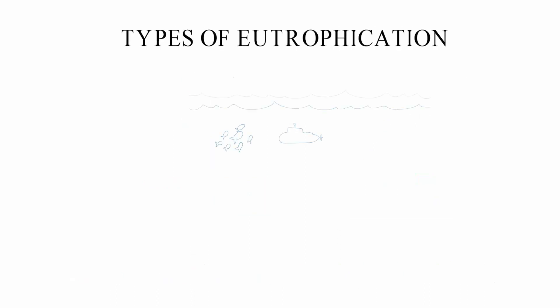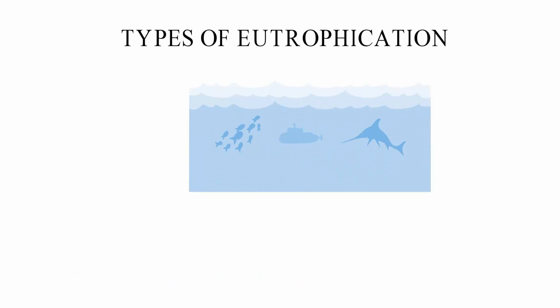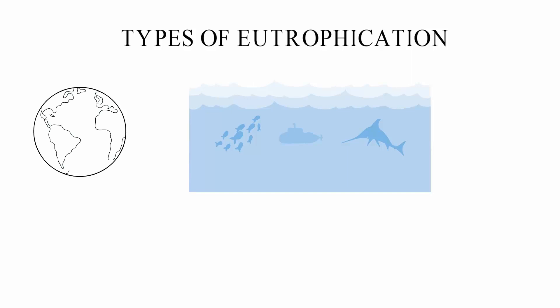Eutrophication is when nutrients build up over time in water bodies. It is one of the most common forms of water pollution in the United States and around the world, and it is caused by a lot of different things.